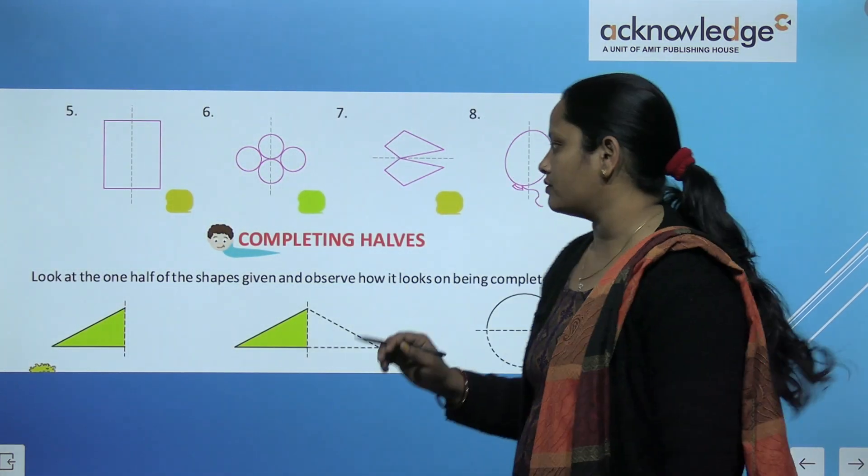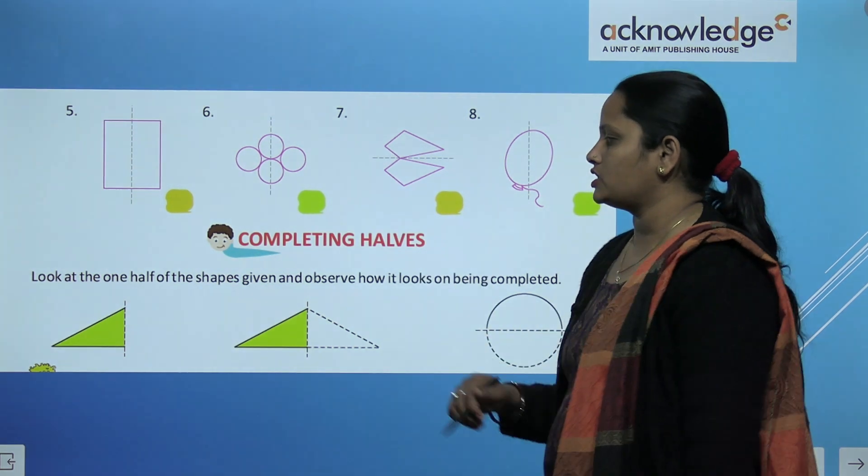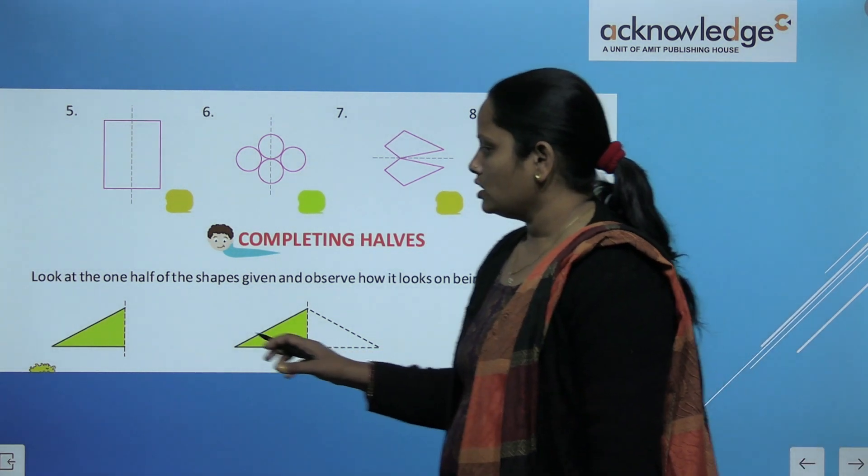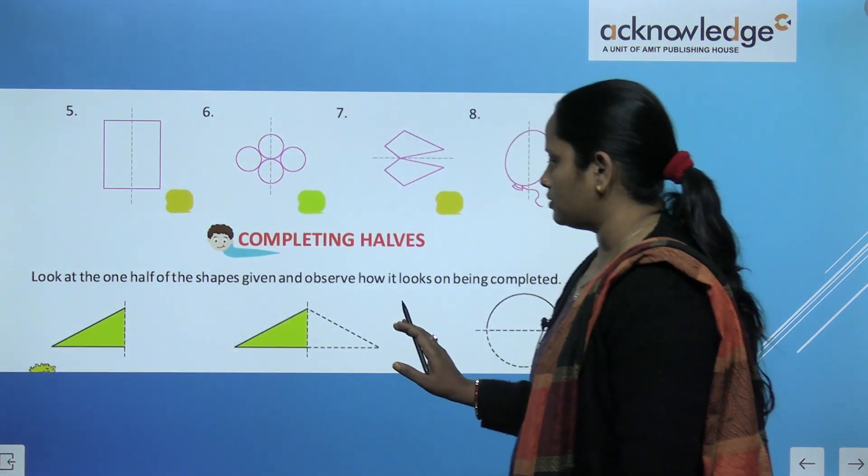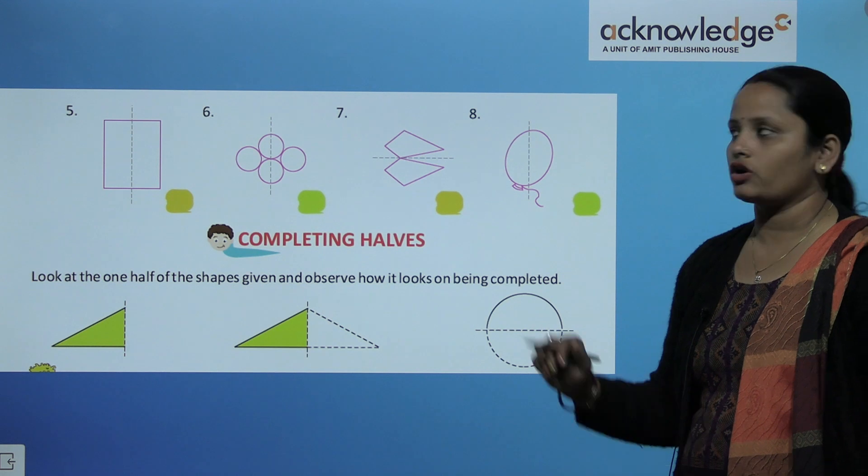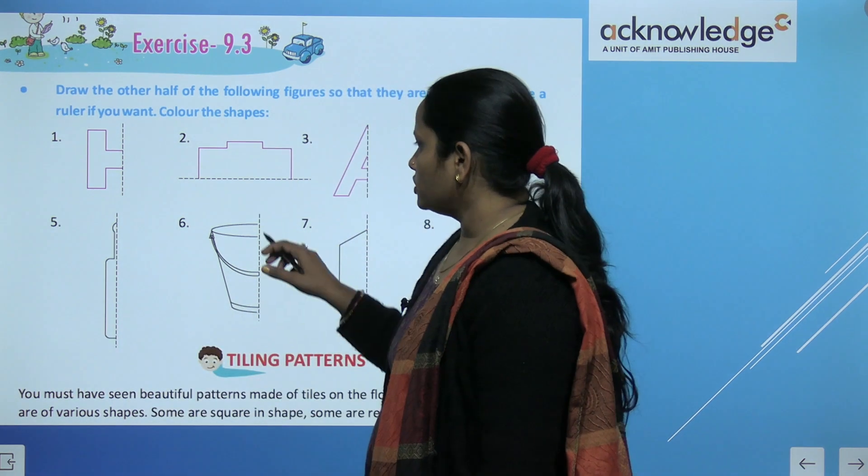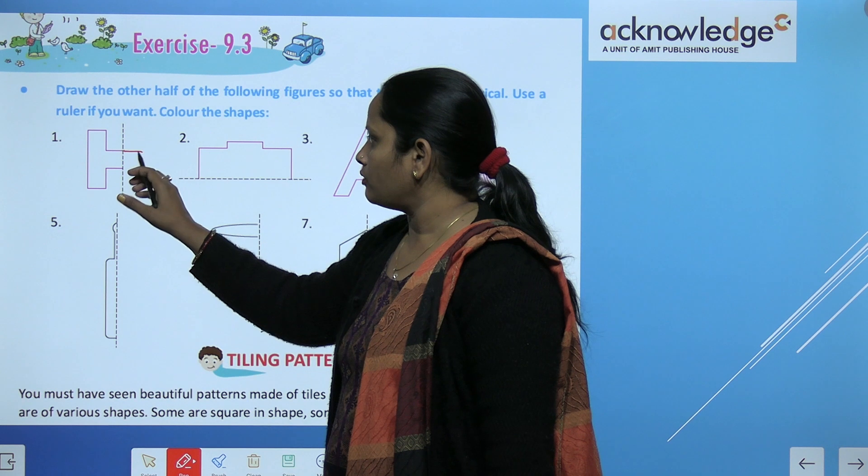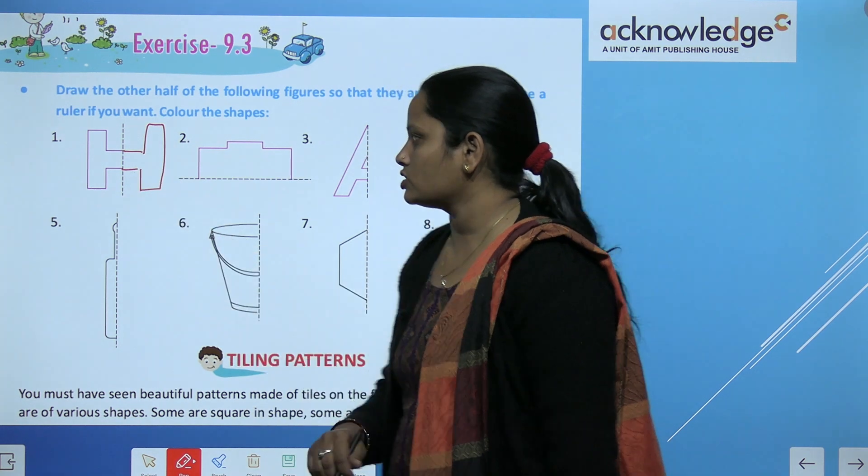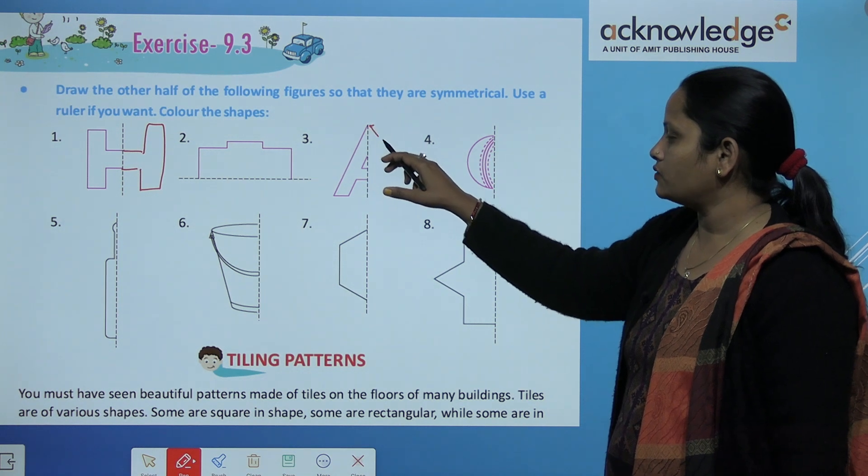Now completing halves. How to complete half? Look at one half of the shape given and observe how to draw and make it complete. So aap dekho yaha pe half figure diya aur iska half banana hai. So you can see here half is made. Similarly yaha pe half figure diya aur iska half draw kiya gaya. Here in exercise 9.3 we have to complete the half figure. So here the first one is we have to draw it like this. Now like this. So this is making an edge.